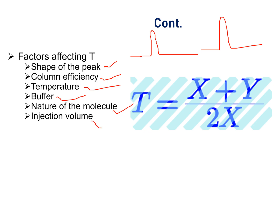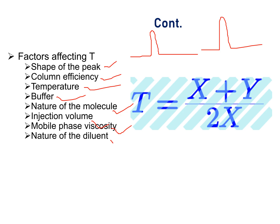Injection volume: tailing factor is directly proportional to the injection volume. Mobile phase viscosity: tailing factor is directly proportional to the mobile phase viscosity. Nature of the diluent: tailing factor also depends upon the nature of the diluent. pH is also a factor affecting tailing factor.